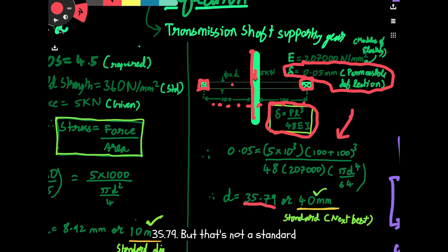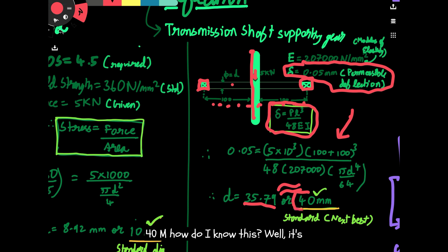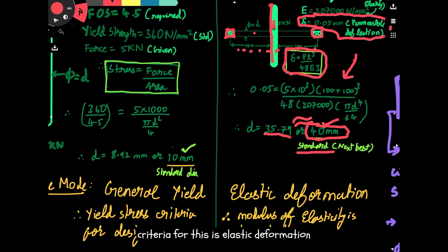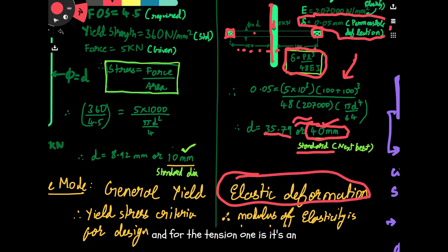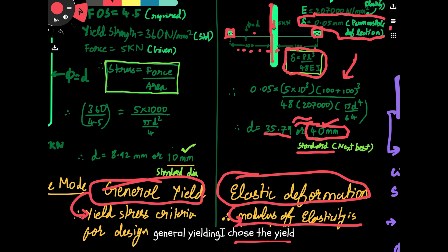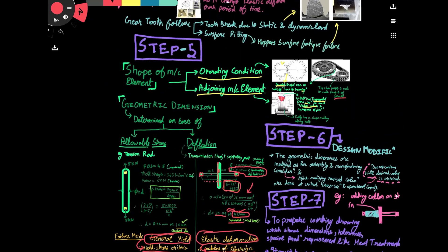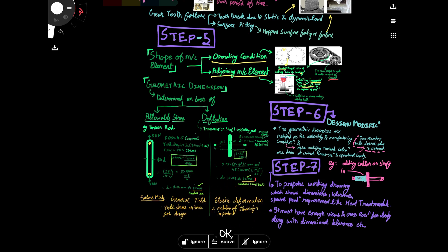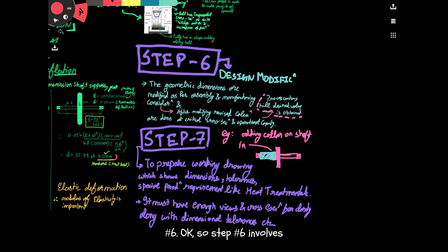Solving the deflection formula gives a diameter of 35.79 mm, but that's not a standard diameter. The next standard diameter is 40 mm, which is selected. For elastic deformation, we chose the modulus of elasticity; for general yielding, we chose the yield strength. This completes step number five on determining geometrical dimensions.